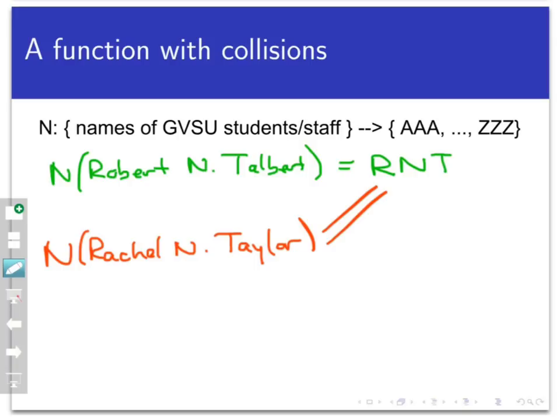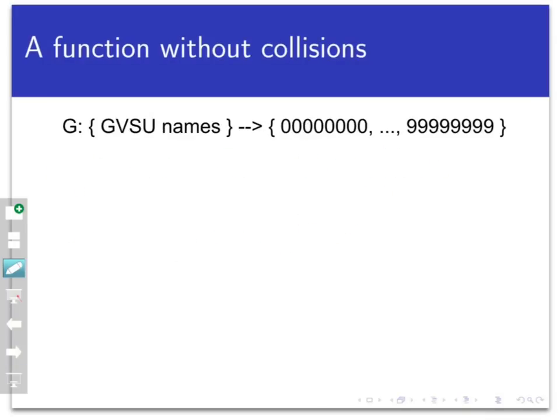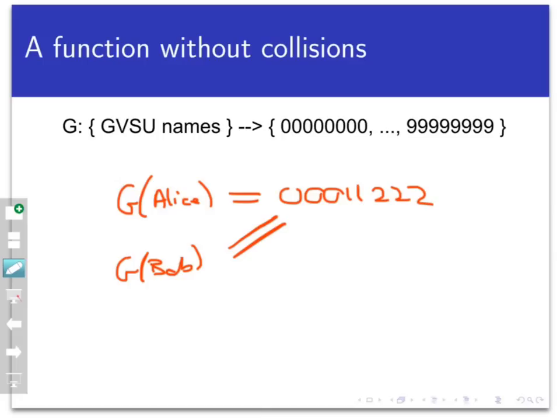On the other hand, there are some functions out there that do not have any collisions, nor do we want them to have any collisions. Take this other early example that maps the set of names of GVSU students and staff into the set of eight digit integer strings by mapping a person to his or her student ID number. Now, this is a function, again, because there's no splitting. Any single student or staff member is not going to have two different ID numbers. But with this function, we definitely hope that there are no collisions, because that would mean two different students mapped to the same ID number. And that would be bad on a number of levels. So this function, by design, would have no collisions.